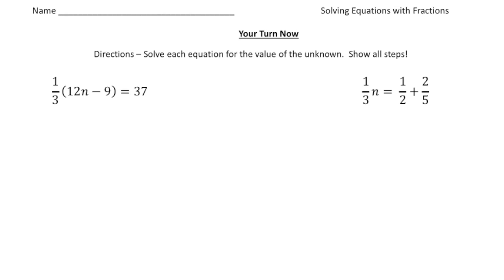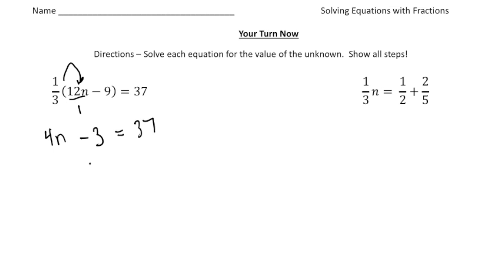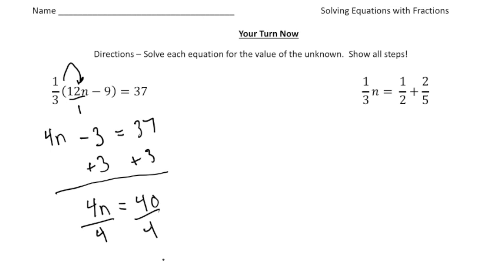Welcome back. Let's see how you did with these practice problems — these are a little bit tricky. The first one: we have one-third times 12 n minus nine equals 37. We have to use the distributive property here. One-third times 12 n — that'd be 12n over three, which reduces down to four n. And one-third times negative nine gives us negative nine over three, which is minus three, equals 37. Now add three to both sides, so we get four n equals 40. Divide both sides by four, and we get n equals 10.